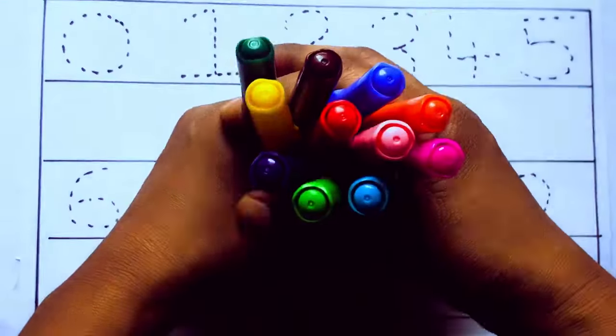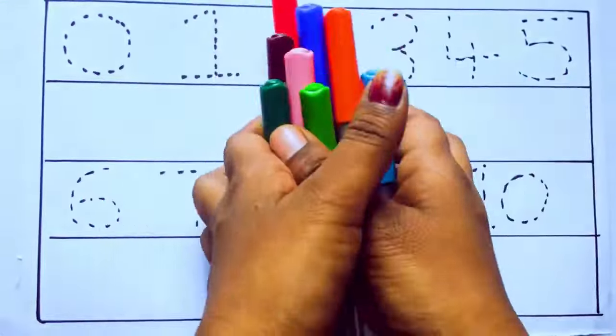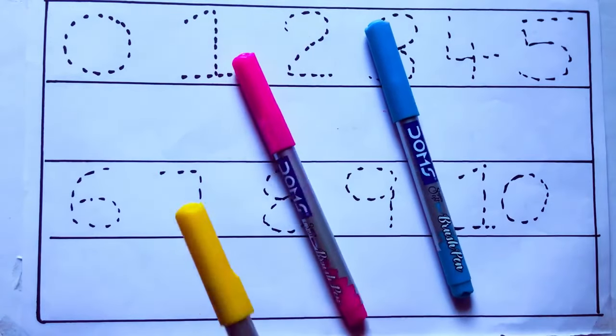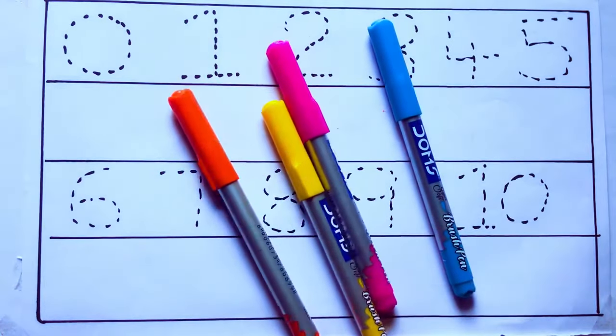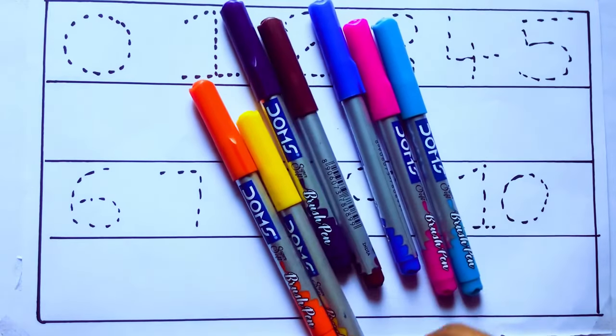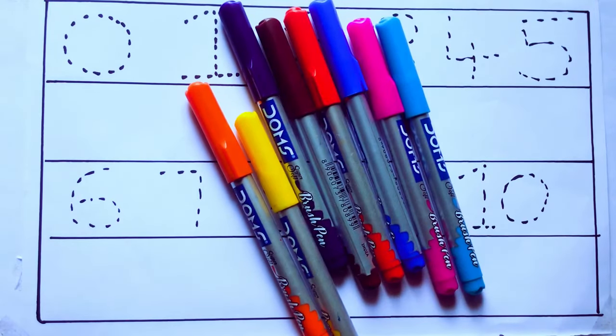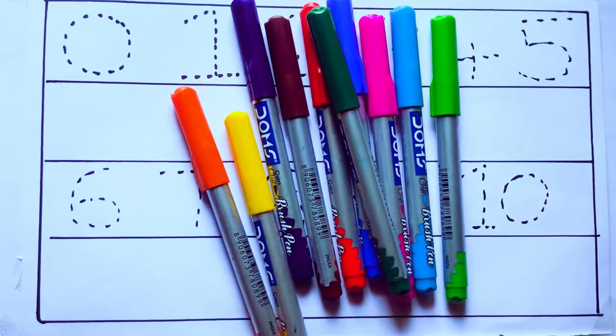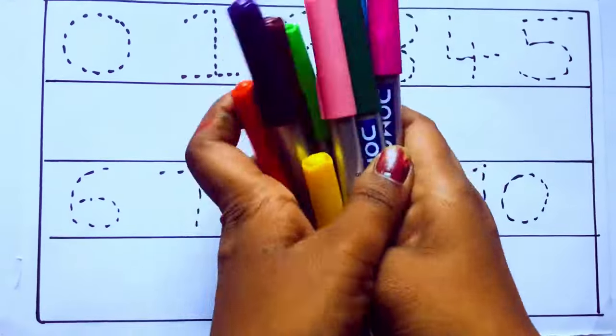Let's learn some colors. These are all the color pencils. Let's learn the names. Sky blue color, pink color, yellow color, orange color, violet color, blue color, brown color, red color, green color, and pink color.